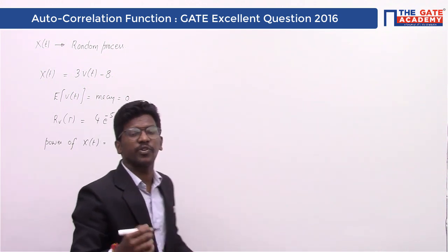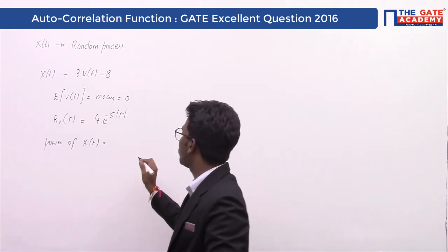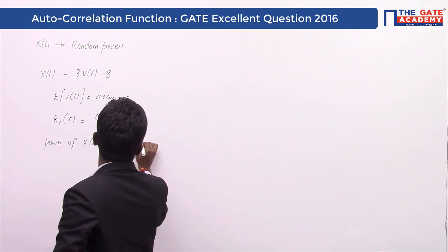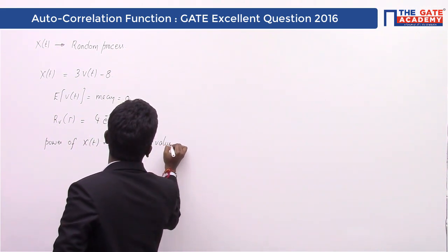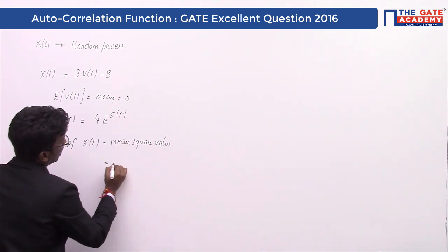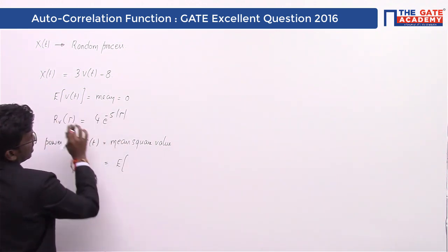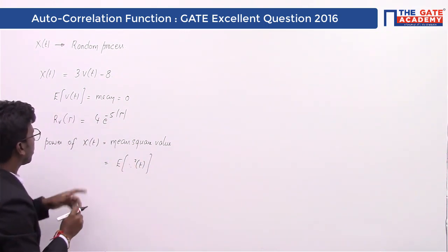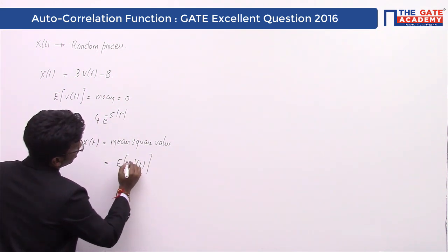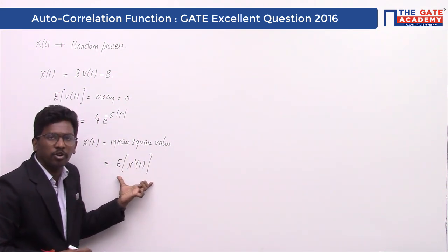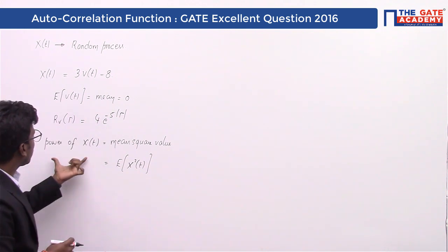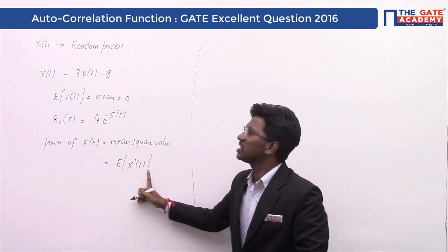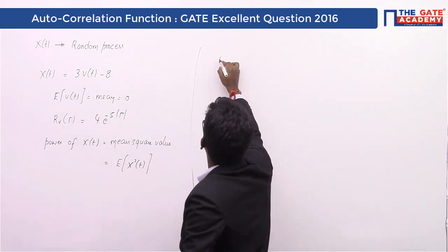In random processes, the power of a signal or random process is nothing but the mean square value. Mean square value means expectation of the square — E[x²(t)]. We need the power of x(t), so we need to find the mean square value. Here x(t) is a function of v(t), so if you are able to find E[x²(t)], you will get the power of x(t).